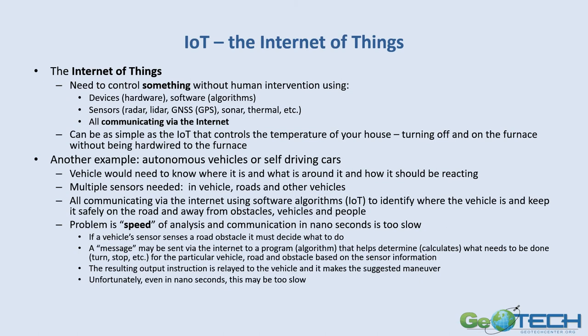The Internet of Things is about controlling something without human intervention. There are devices with hardware, software algorithms, and multiple kinds of sensors — radar, lidar, GPS or GNSS, sonar, thermal, and others — that all communicate via the internet. A simple example is your home furnace: it's controlled by a sensor that reads temperature and turns the furnace on or off at preset values, all controlled via sensors rather than being hardwired.